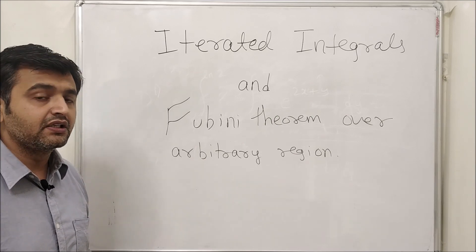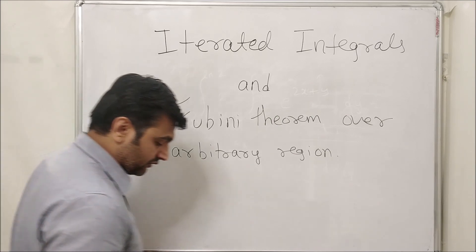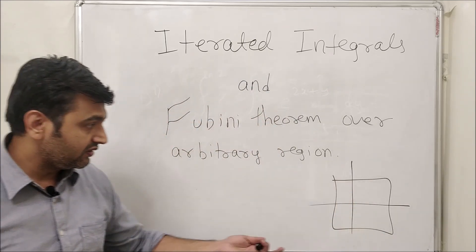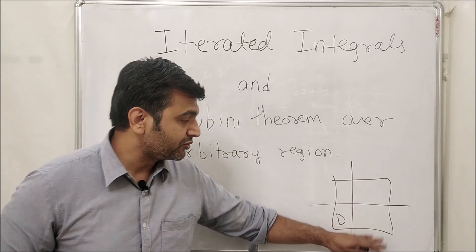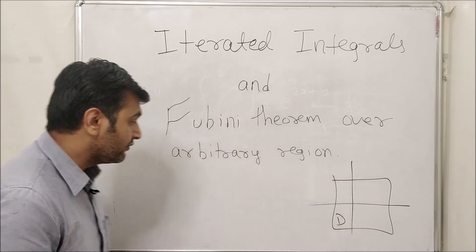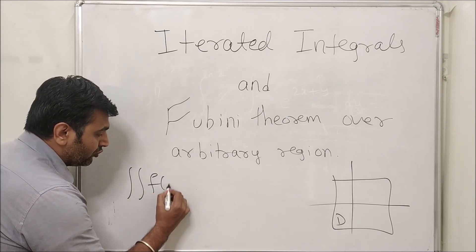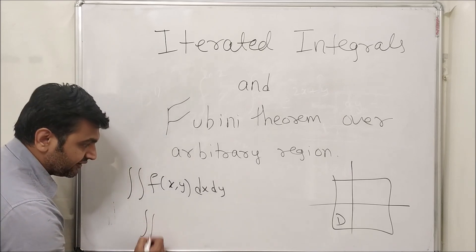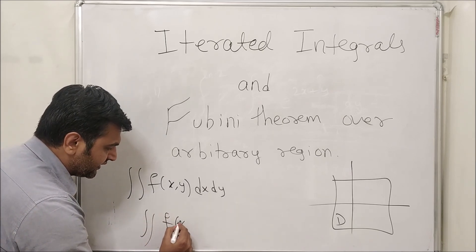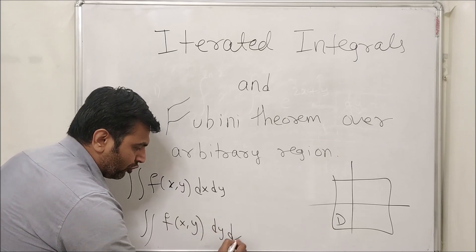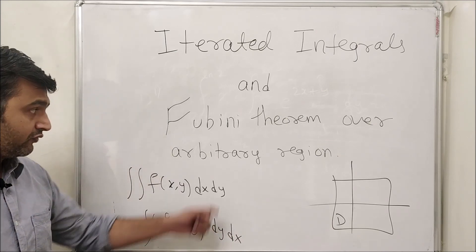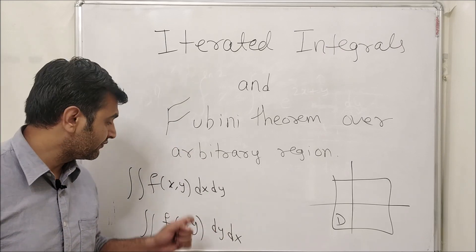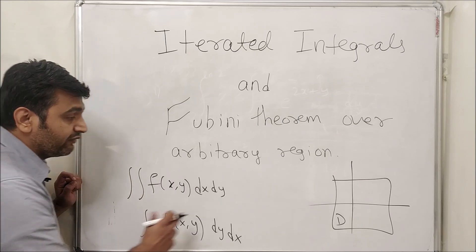In the previous lecture — I'll put the link in the description if you missed it — our domain was a rectangular domain, bounded by horizontal and vertical lines. Whenever you have such a scenario and you want to find the volume under the surface f(x,y), you can take either dx dy or dy dx, whichever order you like, because of Fubini. Thanks to Fubini you always get the same answer, provided your function is continuous.